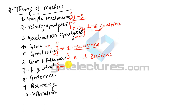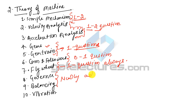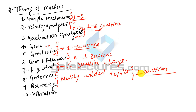Flywheel is very important — always 1 question comes from this topic. Governor and Balancing are newly added topics after 2016, and may contribute 1 question — it may or may not appear.